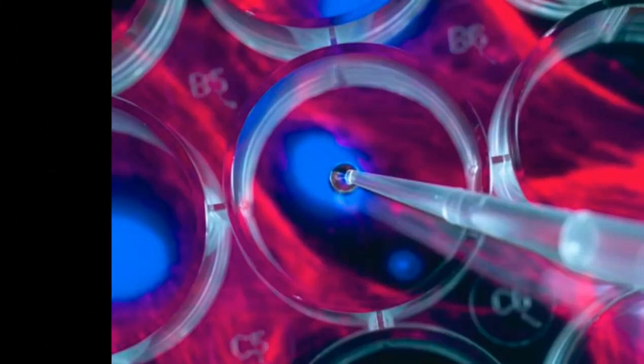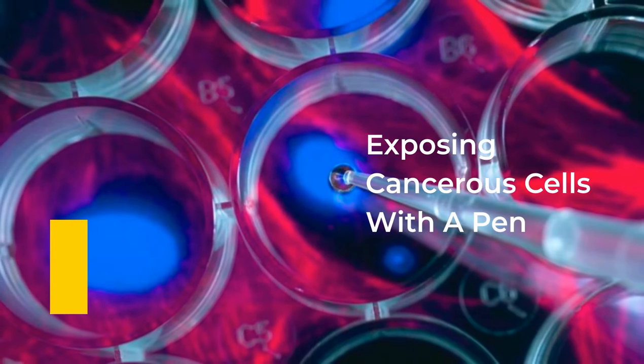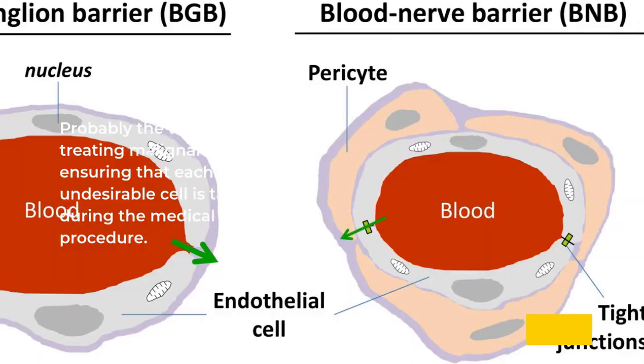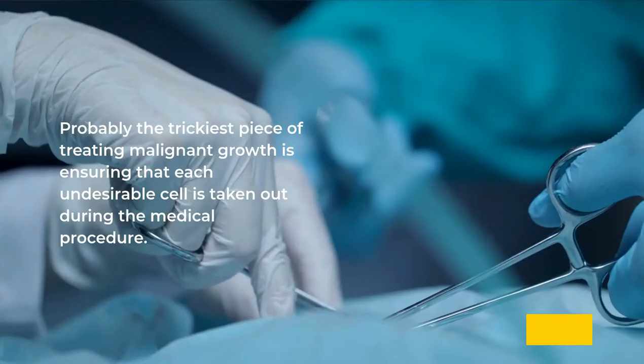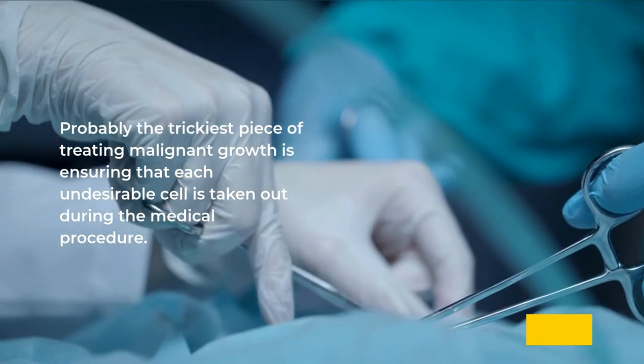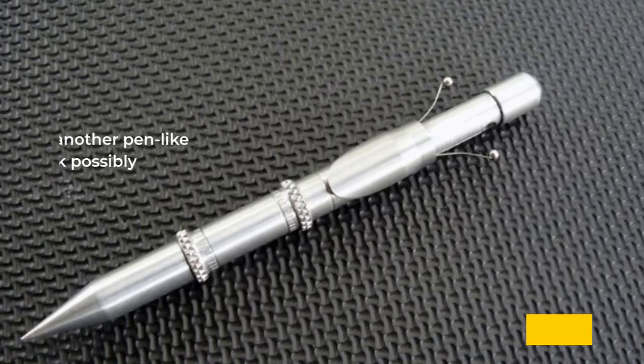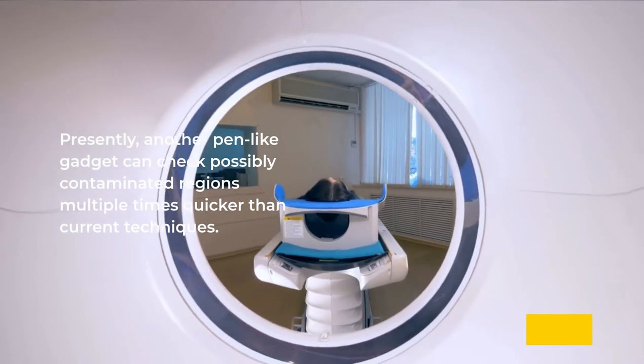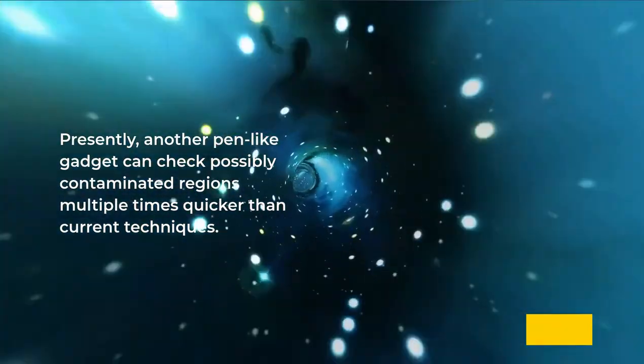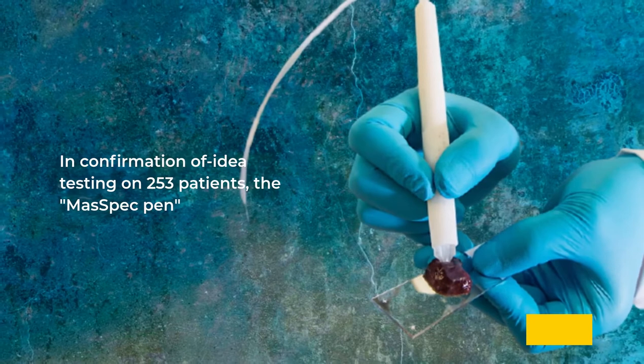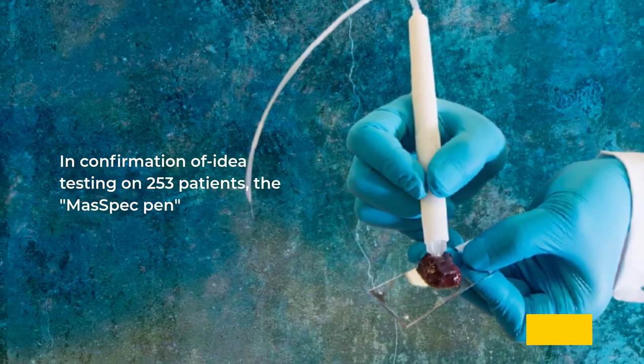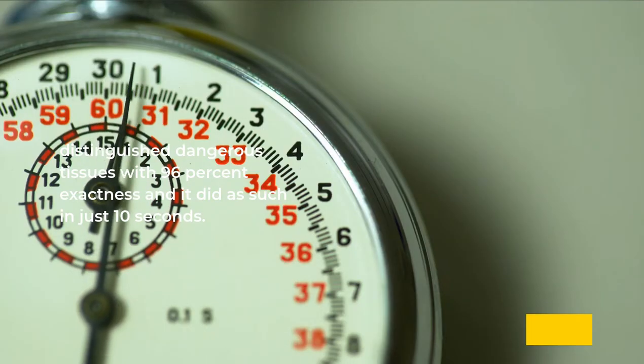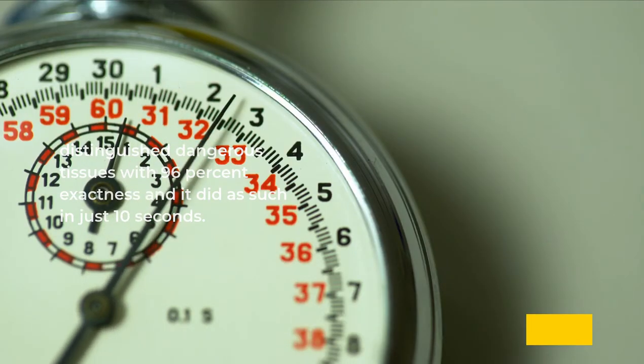3. Exposing cancerous cells with a pen. Probably the trickiest piece of treating cancer is ensuring that each unwanted cell is removed during the medical procedure. Now, a new pen-like device can check possibly contaminated areas 100 times quicker than current methods. In proof of concept testing on 253 patients, the MasSpec pen identified cancerous tissues with 96% accuracy and did so in just 10 seconds.